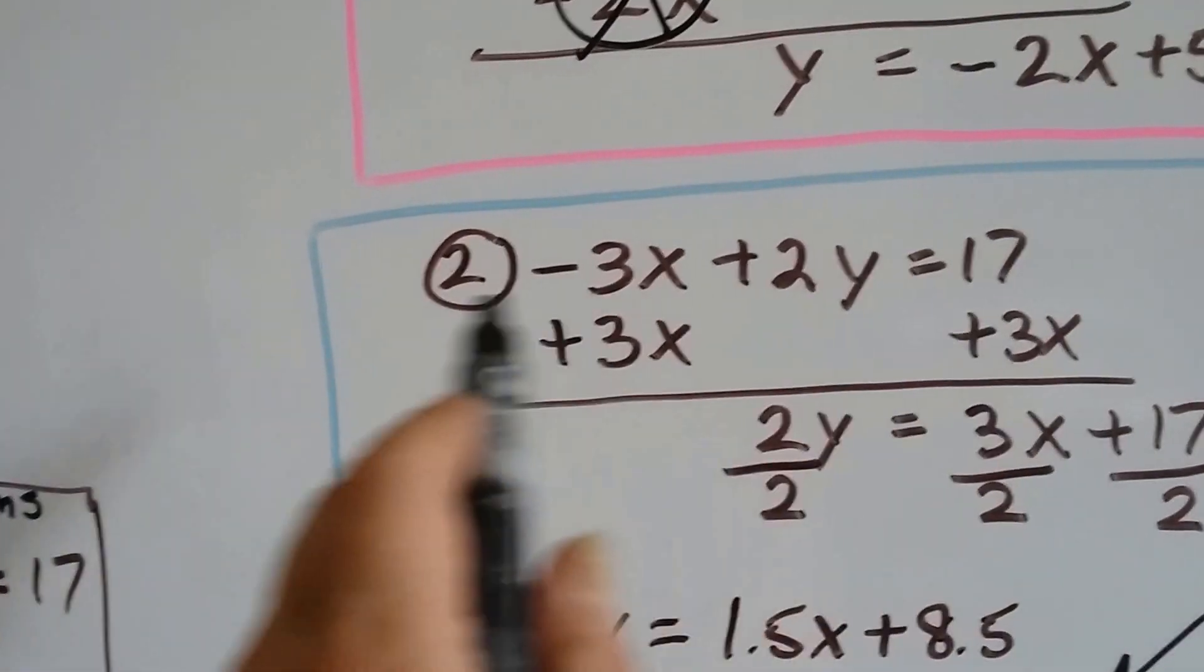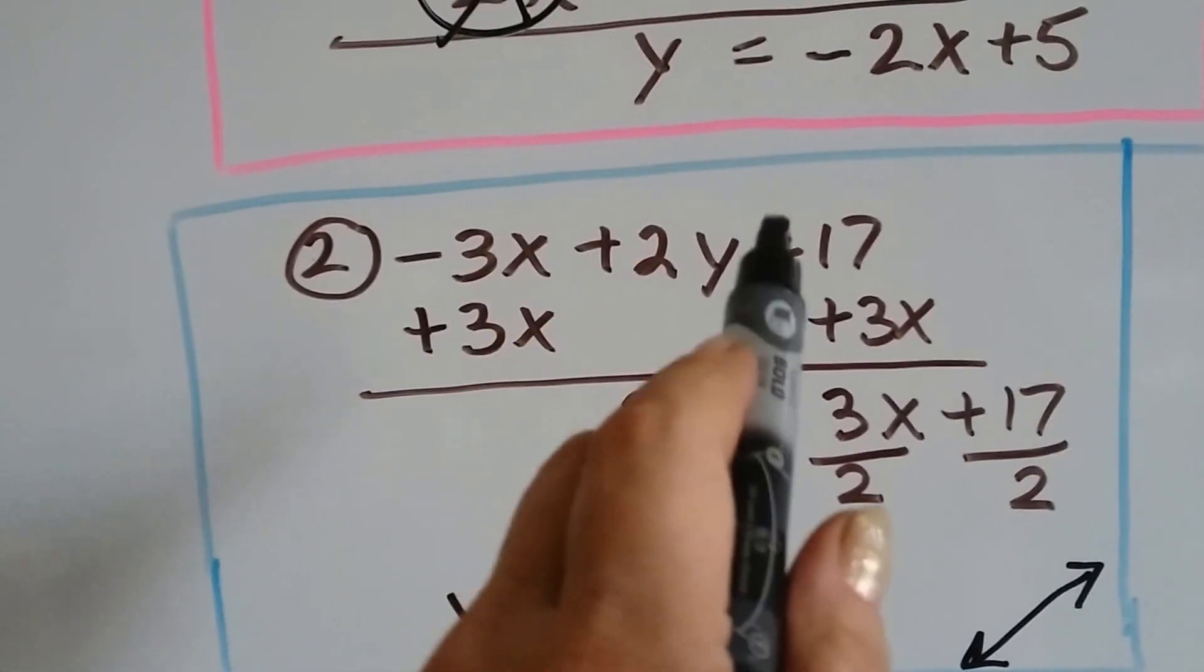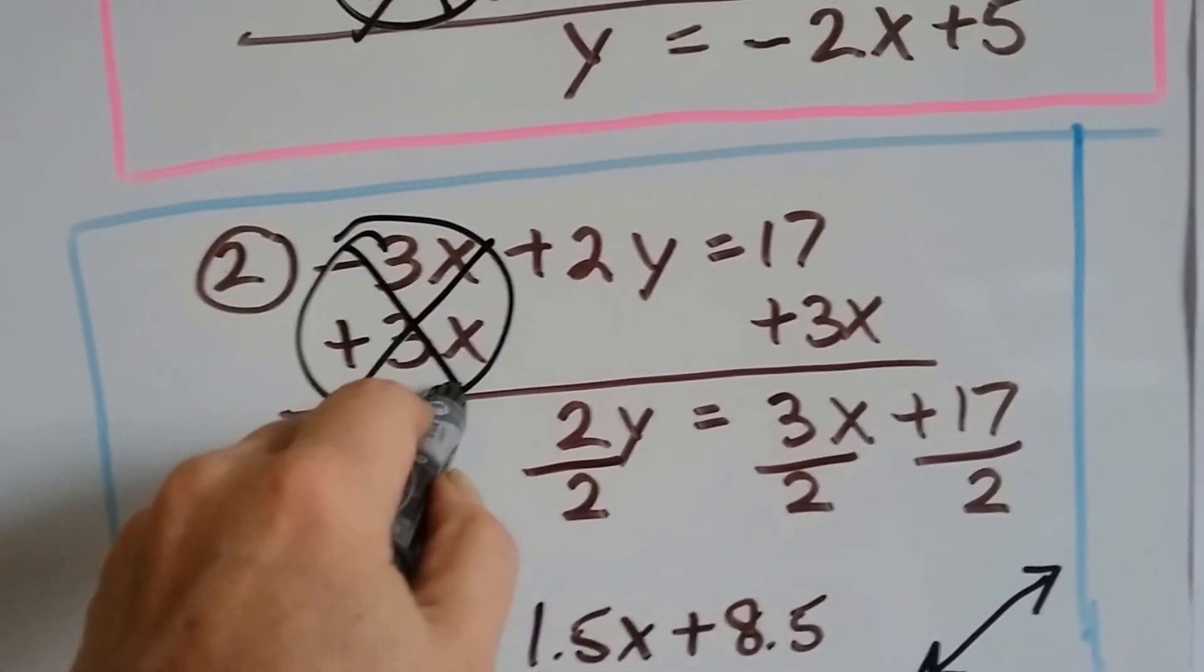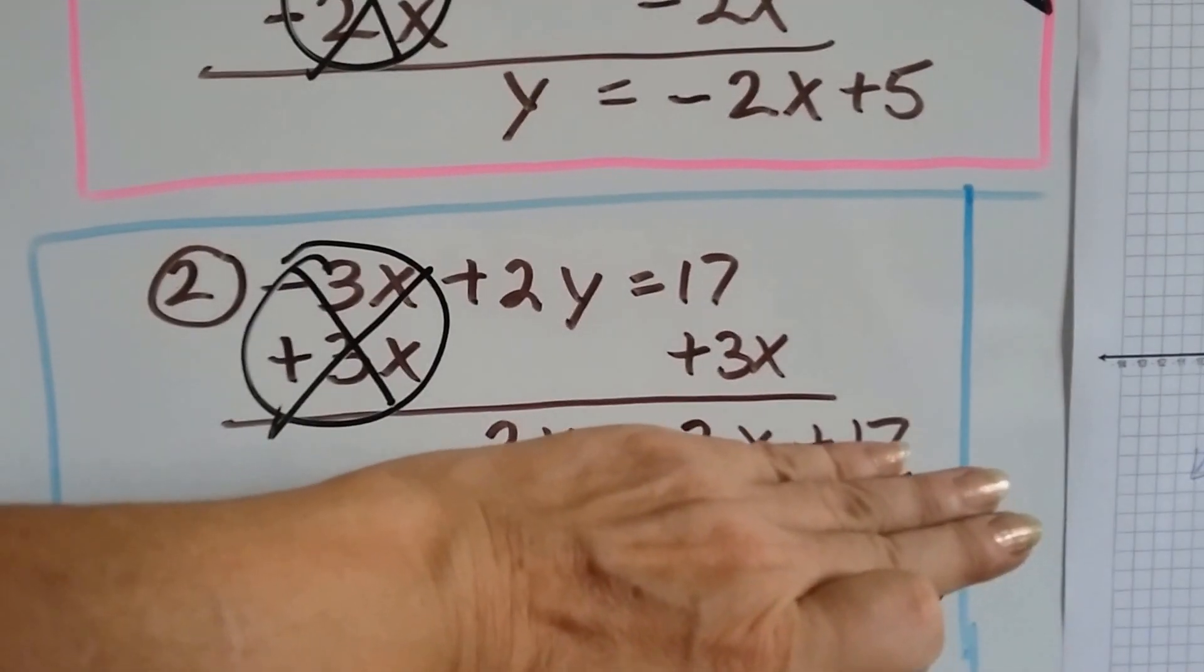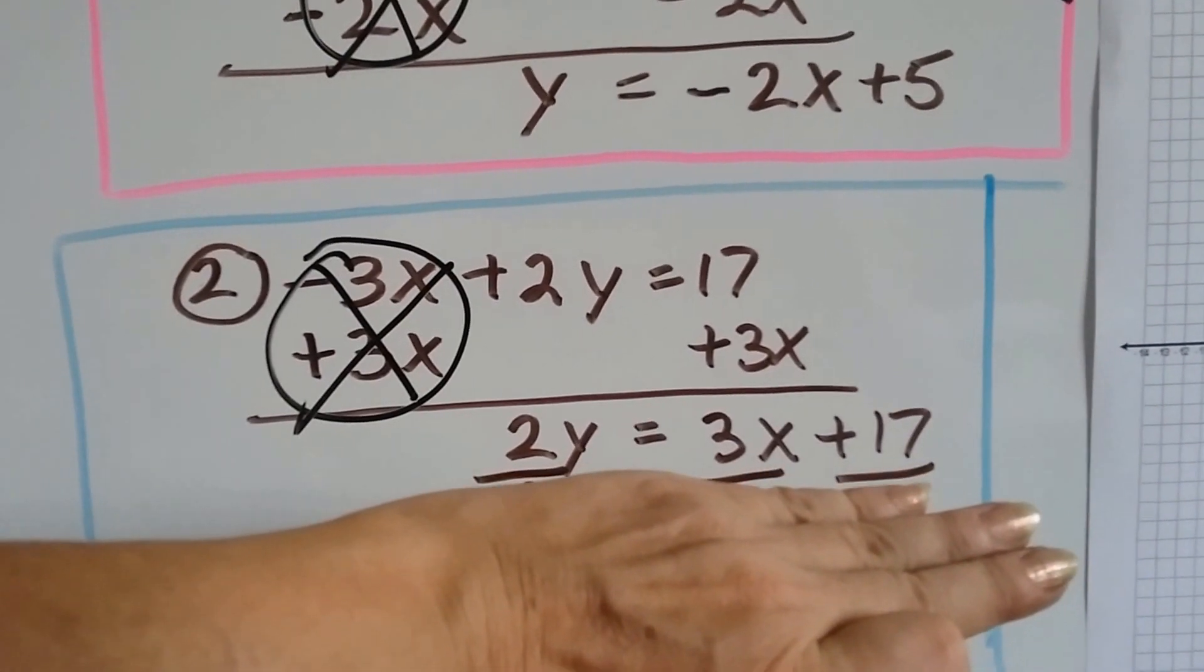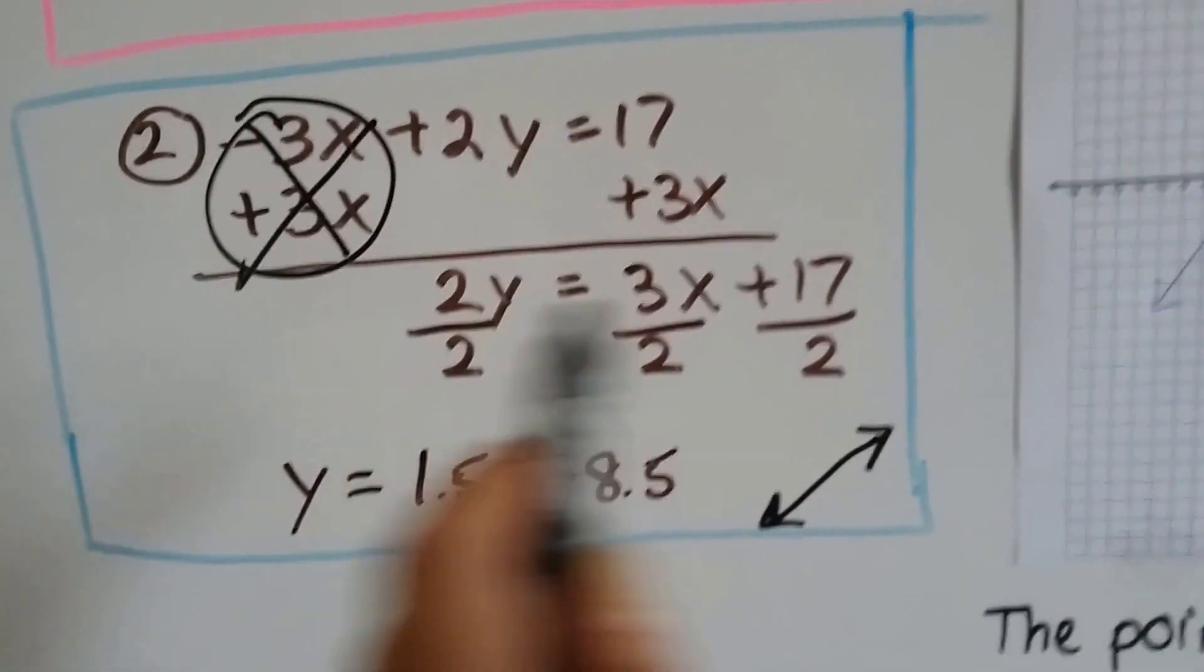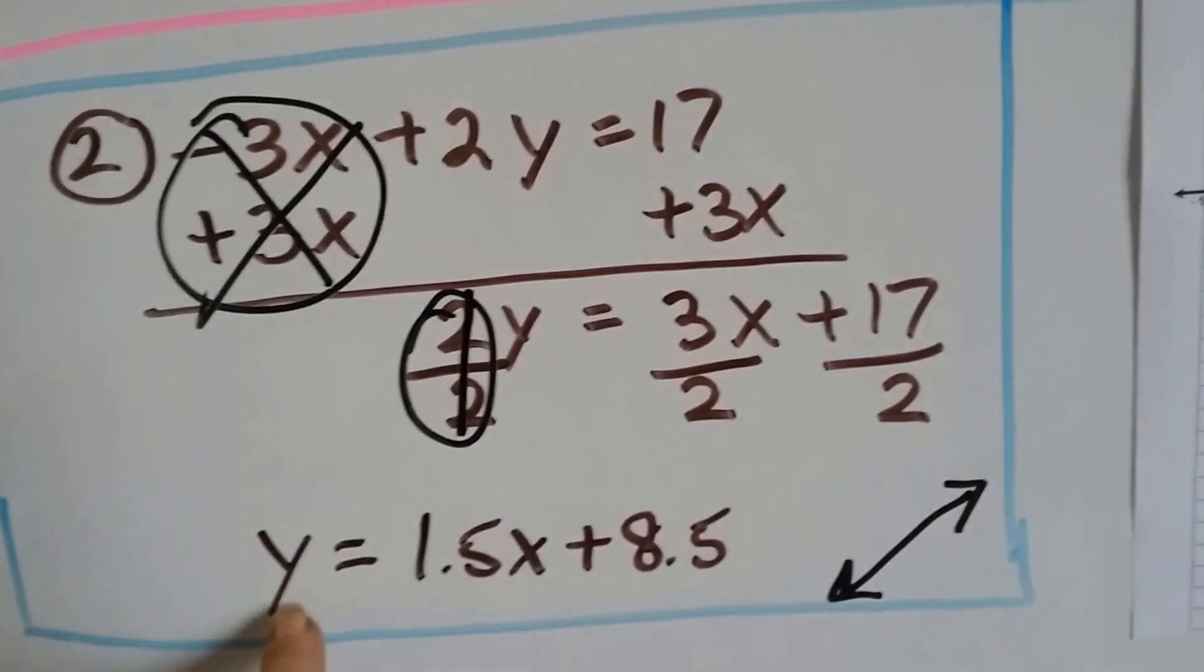So this one needed to be put in slope-intercept form. So I had negative 3x plus 2y equals 17. I added 3x to each side to get rid of this, to eliminate it. So now I've got 2y equals 3x plus 17, but we need to get the y by itself, so I had to divide each term by 2. And what happened was it gave us fractions.